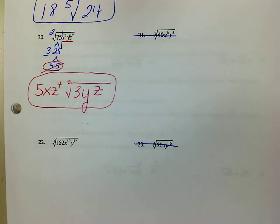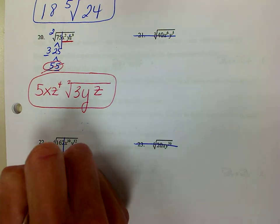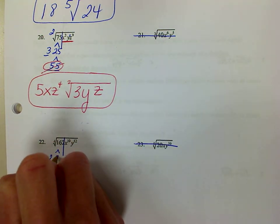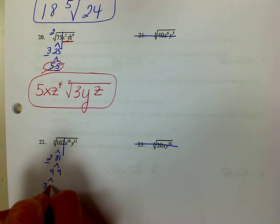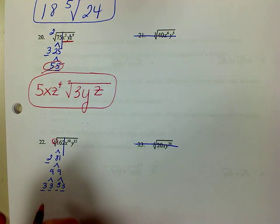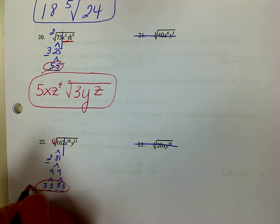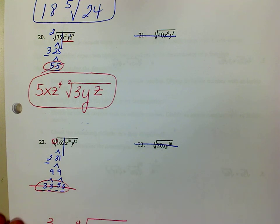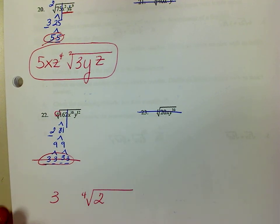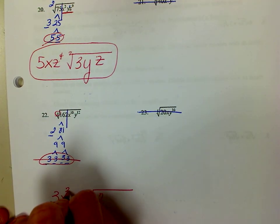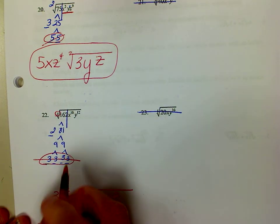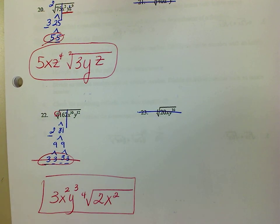Number 22 is just like number 20. I'll break down 162 first — it's even, so 2 can go into it: 162 divided by 2 is 81. Then I'll use 9 and 9, then 3 and 3. My root index is 4, so I need 4 of the same number — which I have. I have one group, so I take out one group of 3. I bring down my radical with the root index, and I have a 2 left underneath. Now the variables: 4 goes into 10 two times — 2 times 4 is 8, I have 10, so the extra 2 are underneath. And 4 goes into 12 exactly three times. That is my final answer to number 22.